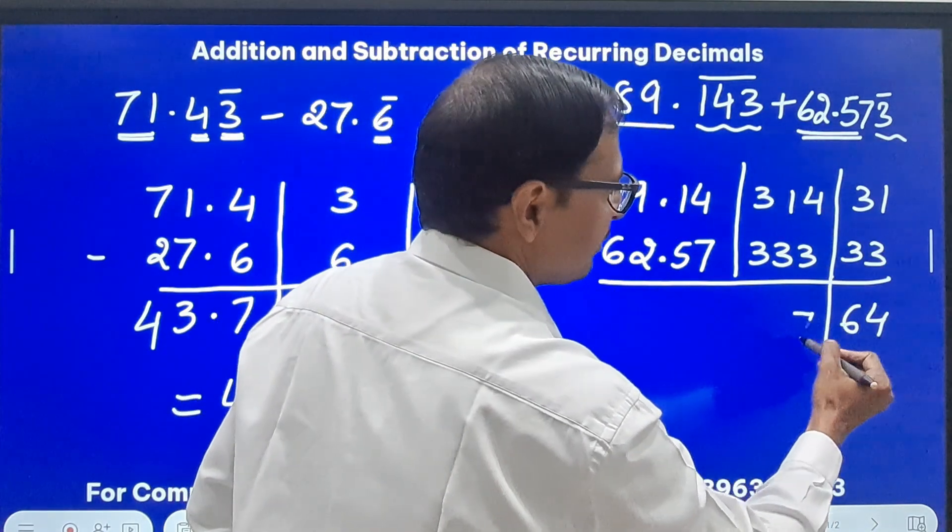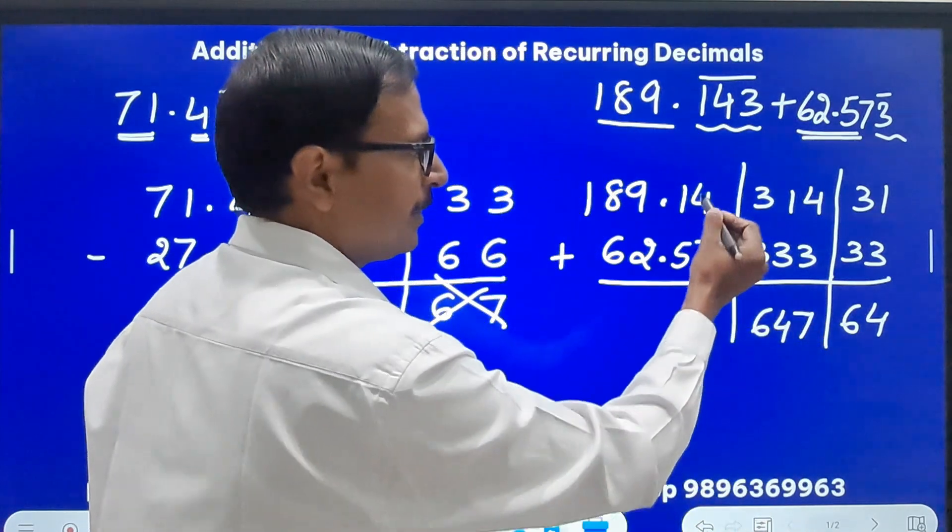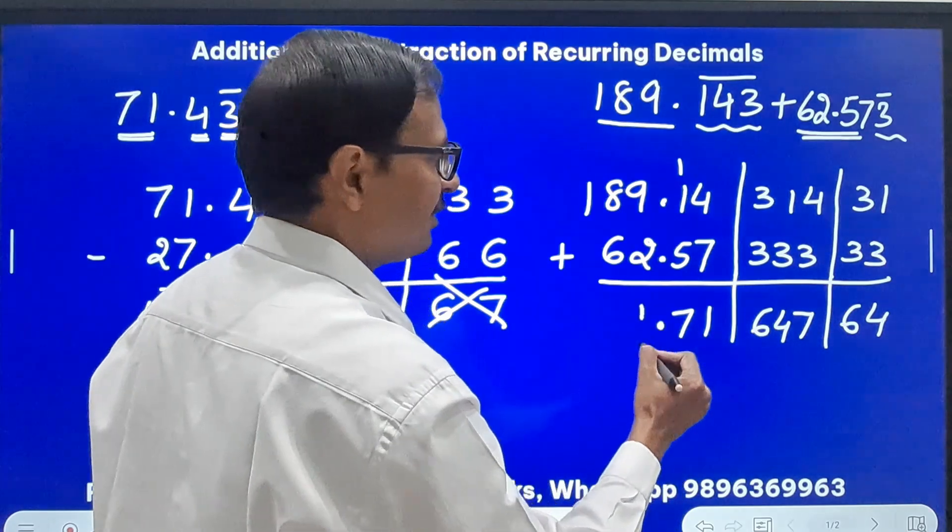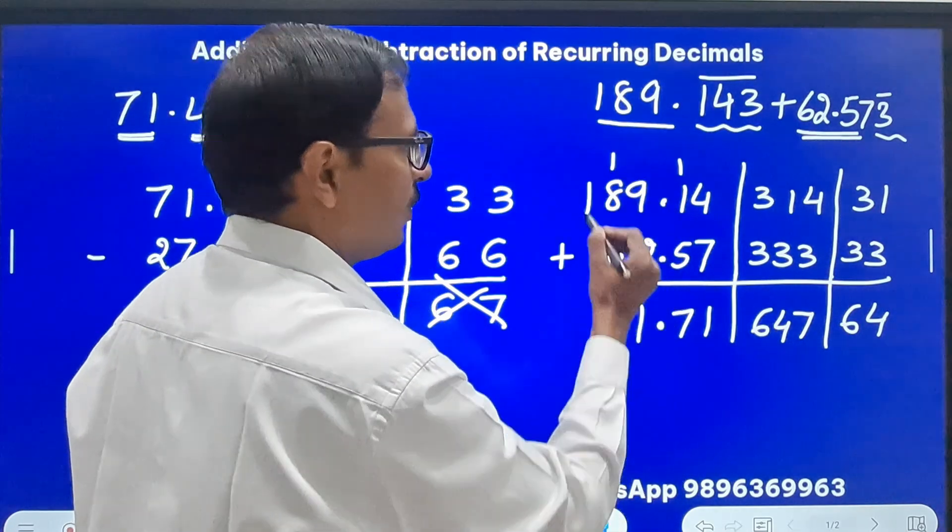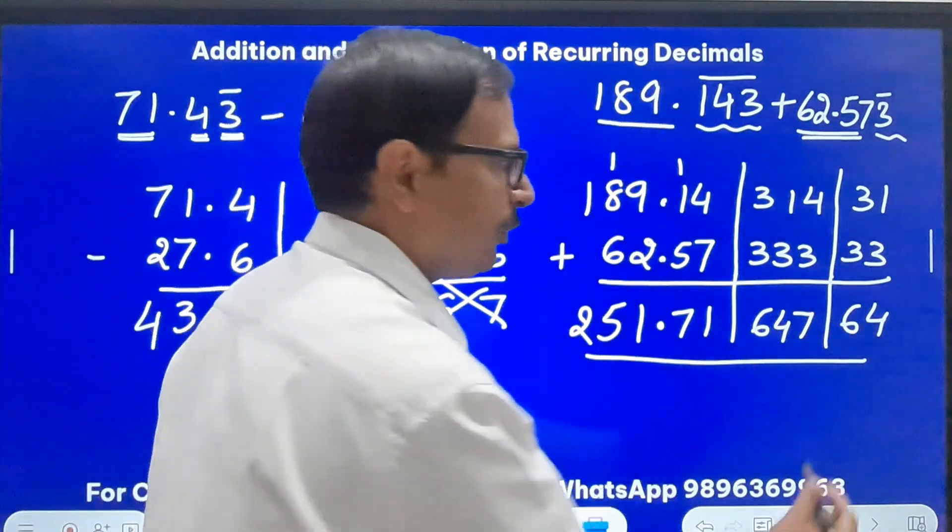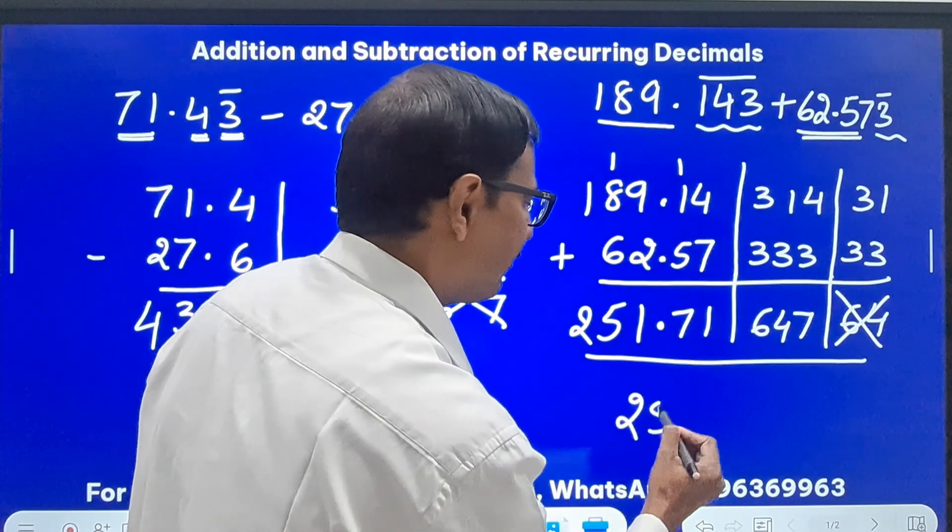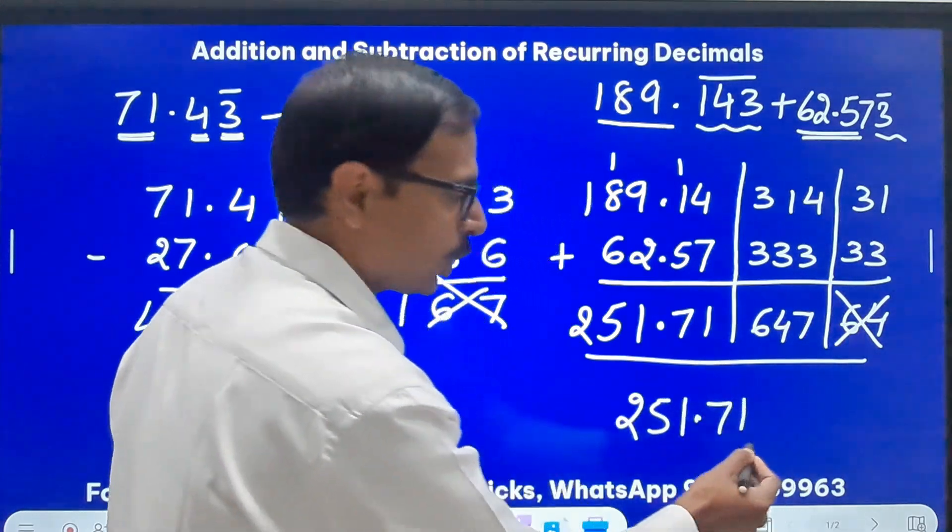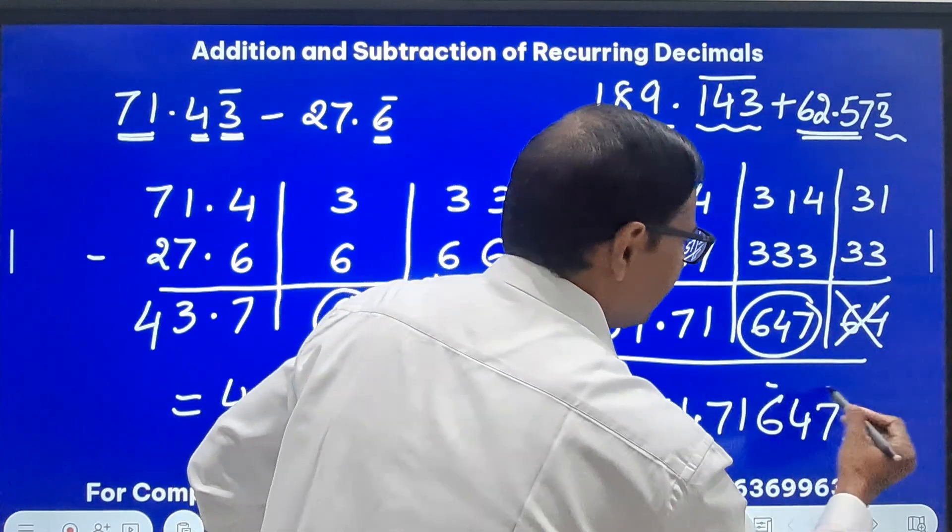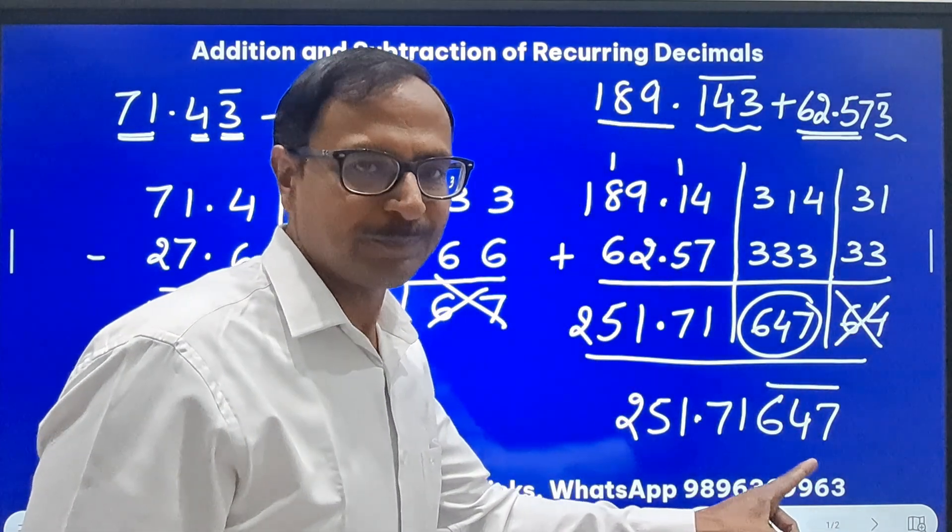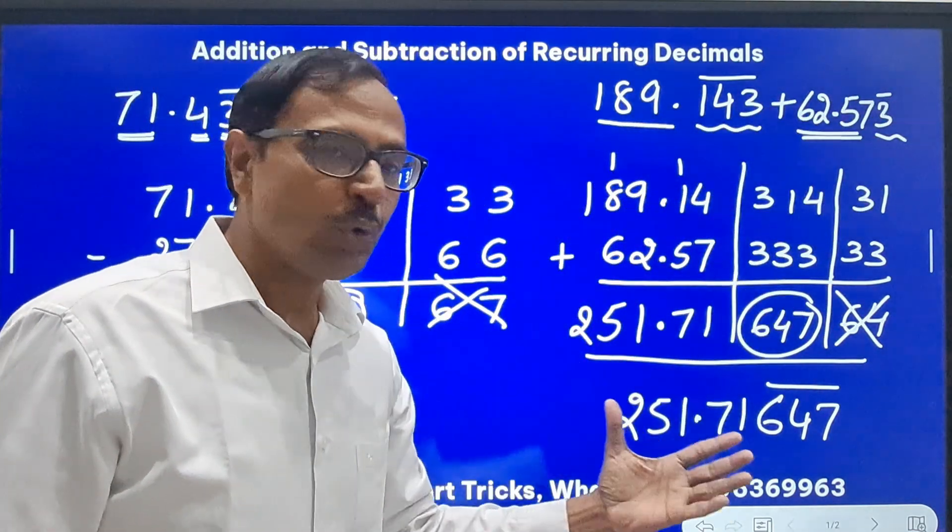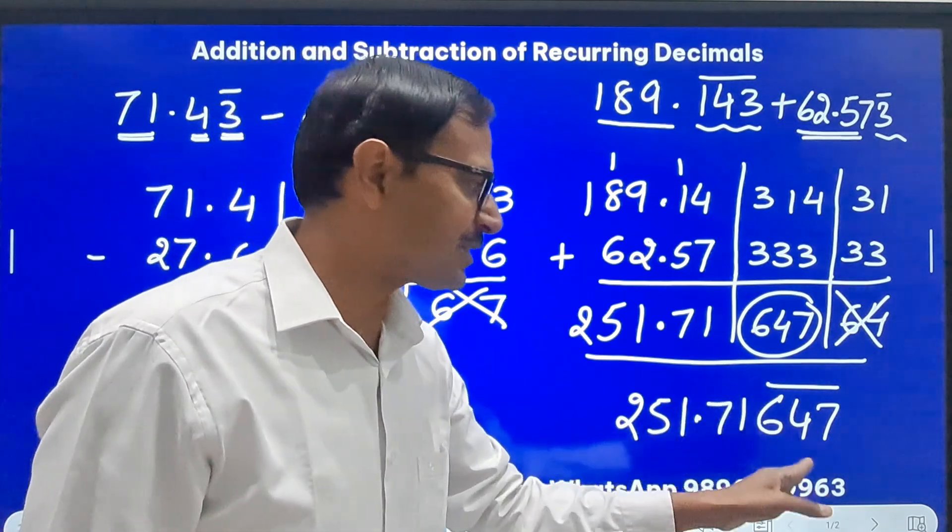So let's do the addition. This is 4, this is 4, this is 6 which forms the last part. This is 7, this is 4, this is 6 which forms the middle part. This is 11, 1 carry means 7 point, 11 means 1 carry means 15, 5, 1 carry means 2. So here we have the sum. Now forget the last part, 251.71 that is non-recurring part, and the recurring part is 647 which will be under the bar.